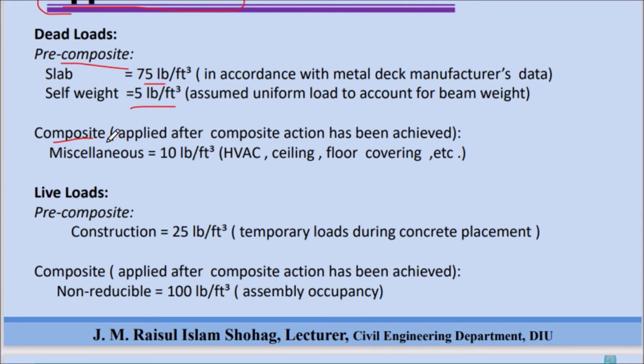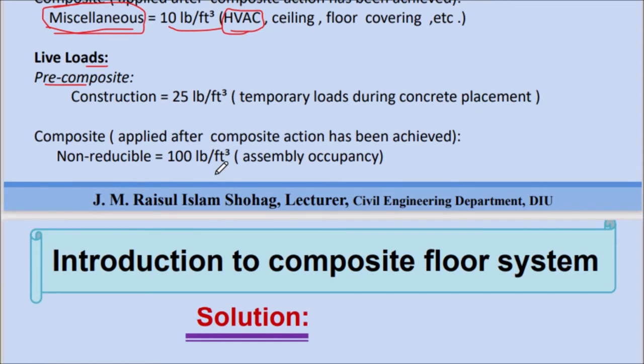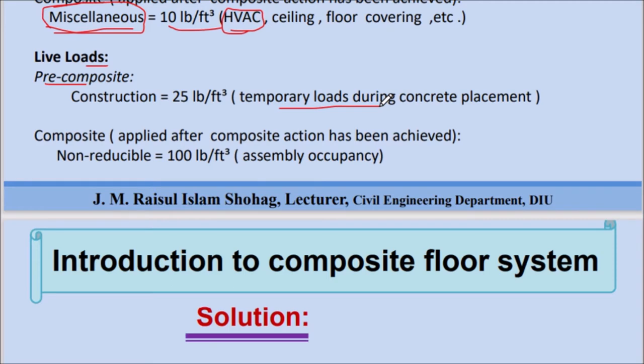This is self-weight of the beam zone. Composite section means floor finish, plaster, and decoration have already been completed. This is miscellaneous load - M-I-S-C-E-L-L-A-N-E-O-U-S - which is 10 pounds per square foot. This includes HVAC (heating, ventilation, and air conditioning), ceiling, floor covering, etc.